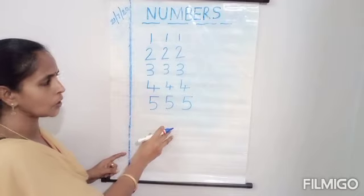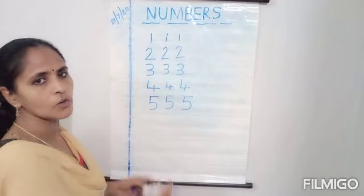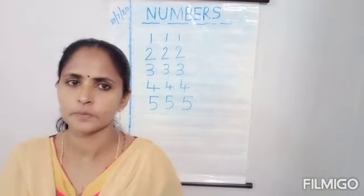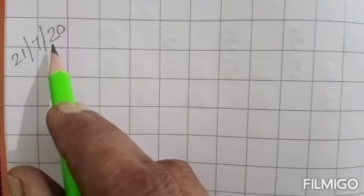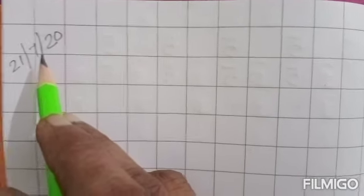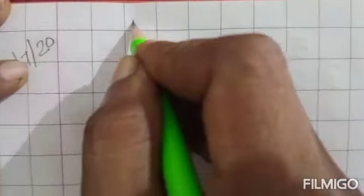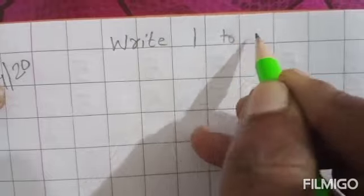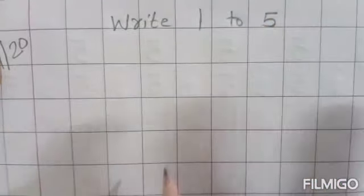Like this, let us practice in notebook. Kids, all of you take out your notebook. Kids, write today's date here. 21, 7, 20. Let us write. 1, 2, 5.